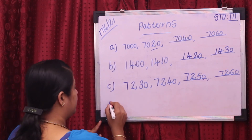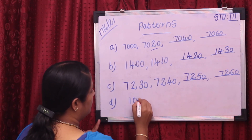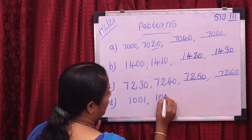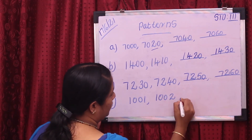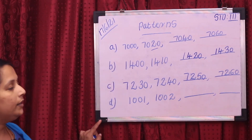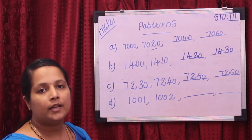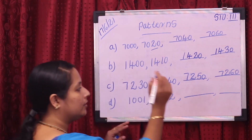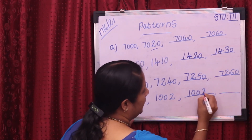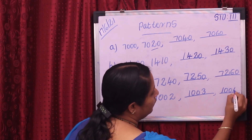Then one more example. Given the pattern is 1,001, next is 1,002. Fill up these patterns. 1,001, then next number is 1,002, so next number is 1,003, then our next pattern is 1,004.